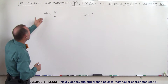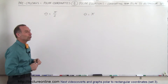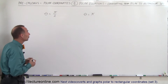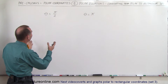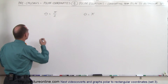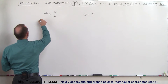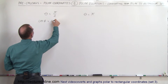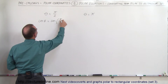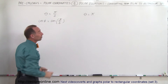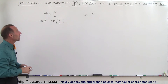So what do you do when you get something like theta equals pi over 2? What does that look like in terms of rectangular coordinates? The first thing you want to do is take the sine or the cosine of both sides. Let's go ahead and try the cosine. So if theta equals pi over 2, we take the cosine of both sides and that should still be the same.